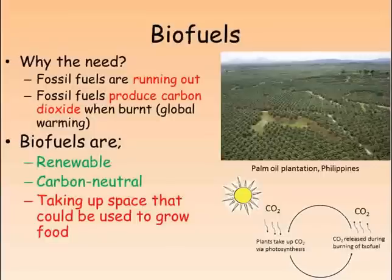One of the advantages of these crops is that they're renewable — the crops grow quickly so they can be produced year after year. They're also known as carbon neutral: the carbon dioxide produced when they're burnt balances out the carbon dioxide that they absorbed through photosynthesis when they were growing. One of the big problems of these crops, however, is that they take up land that could be used for growing crops for food.